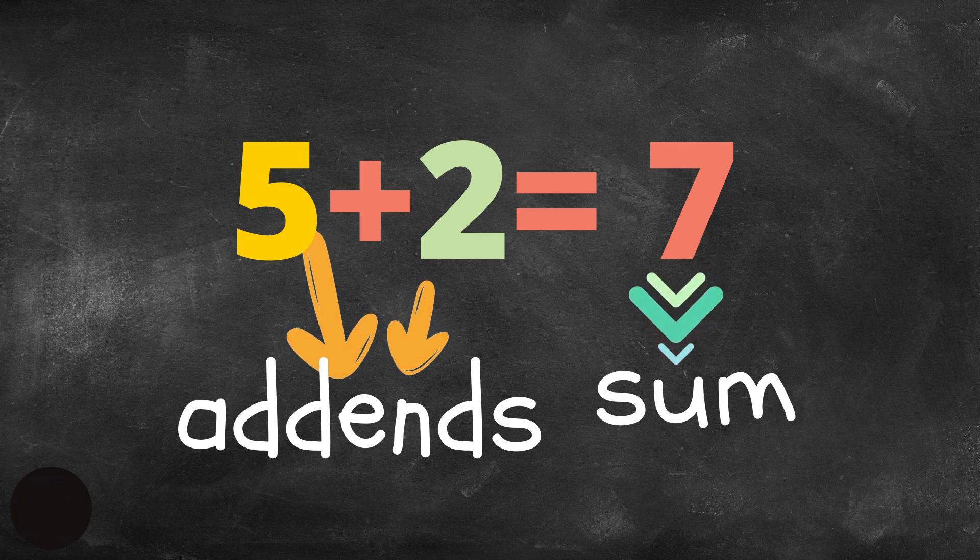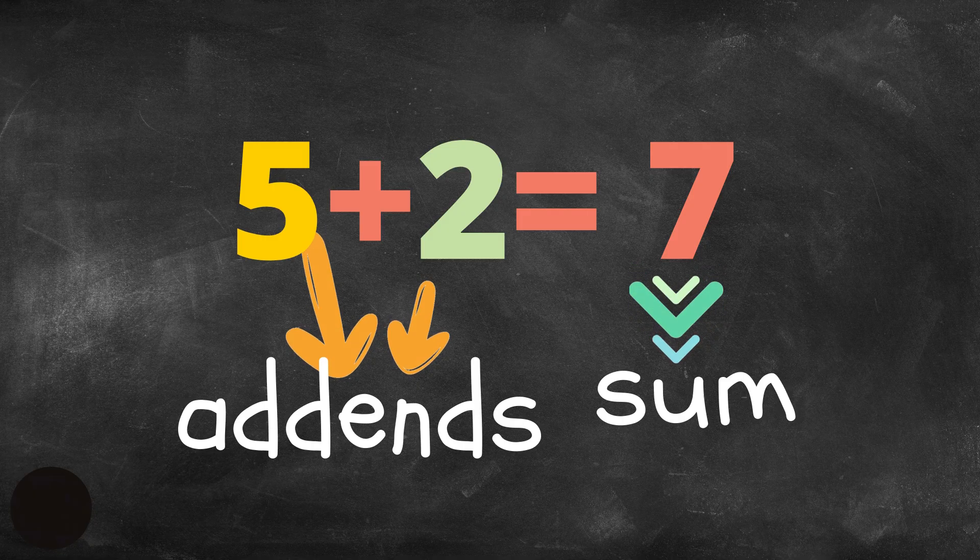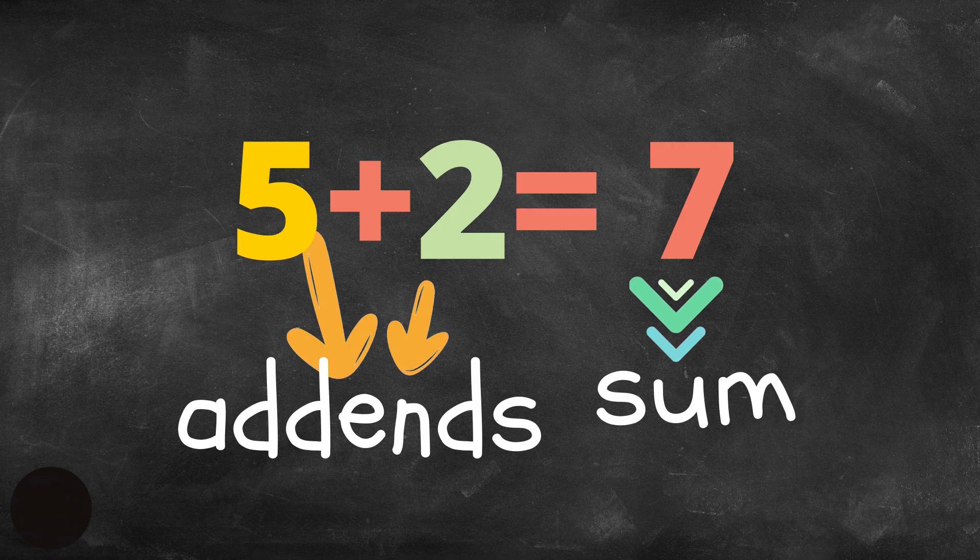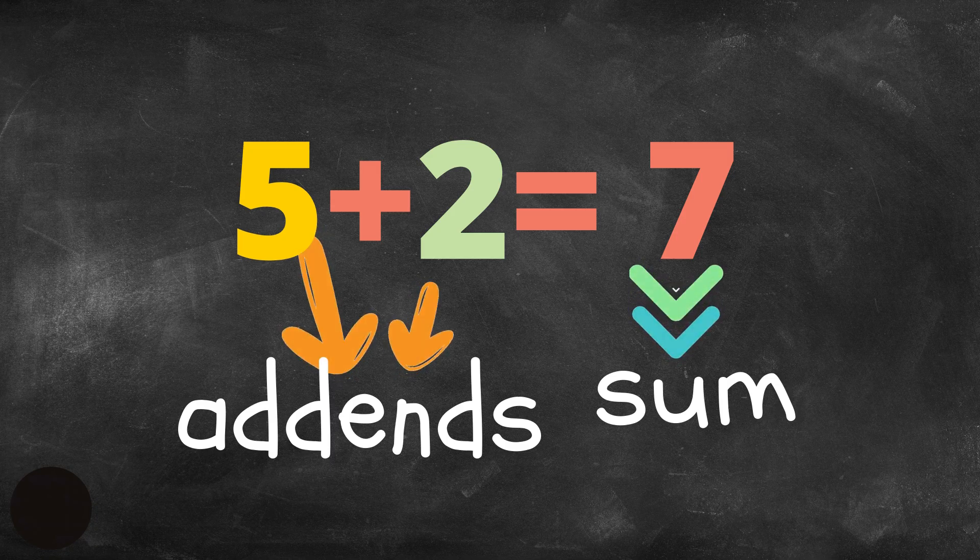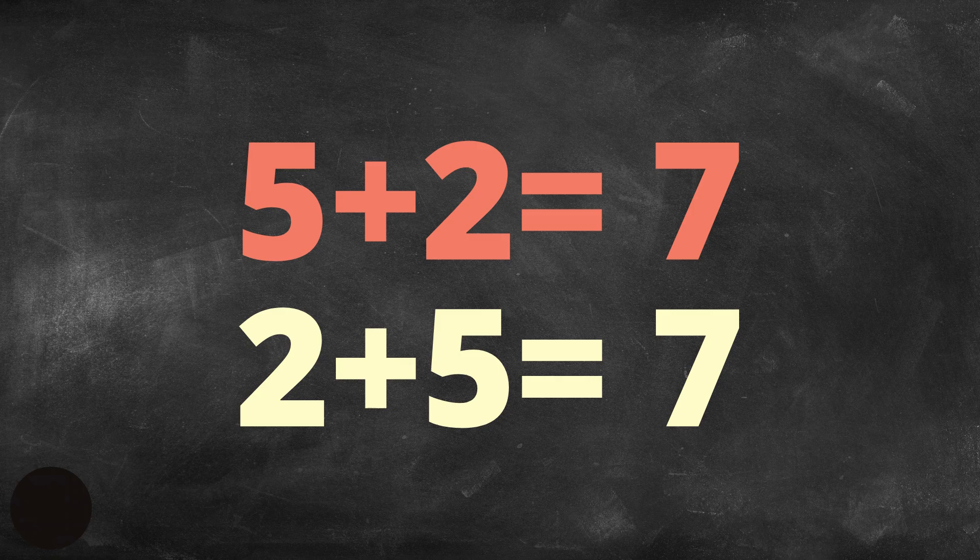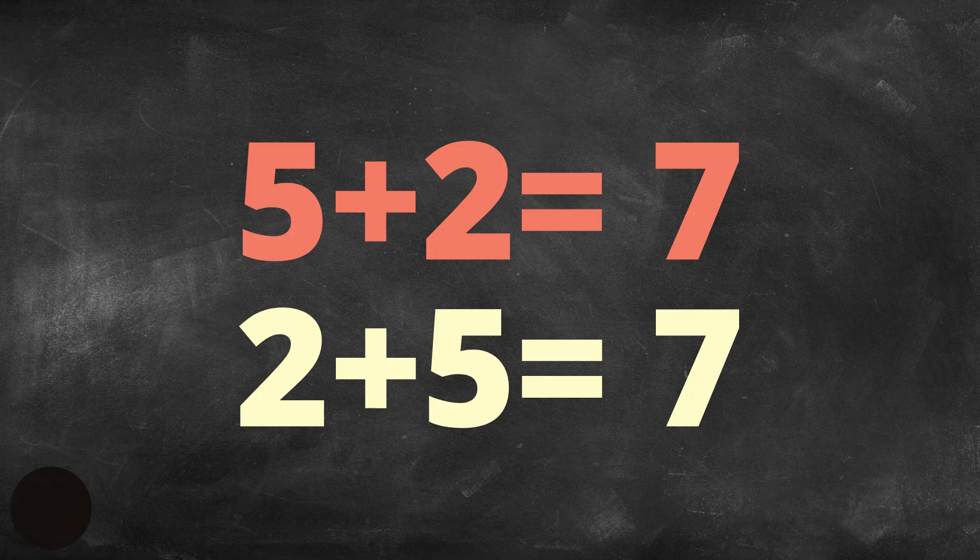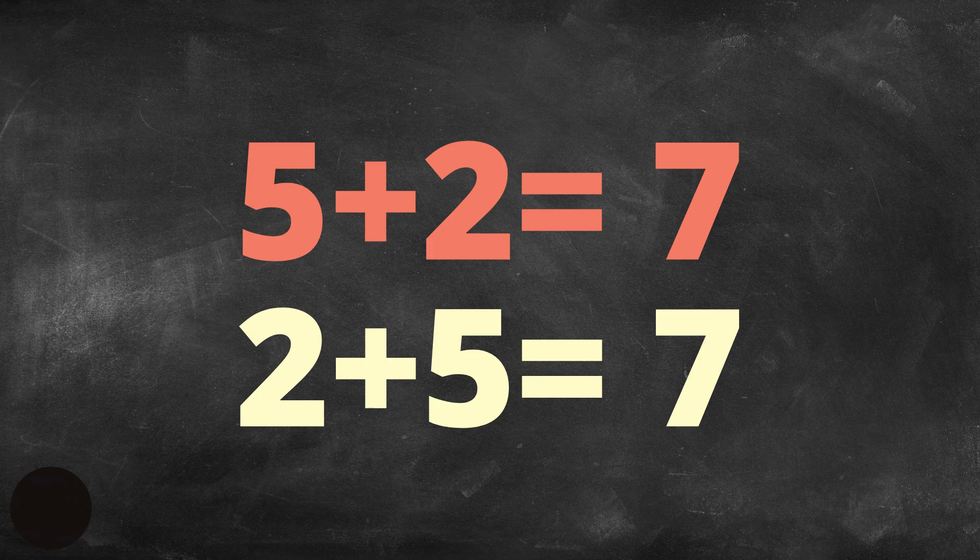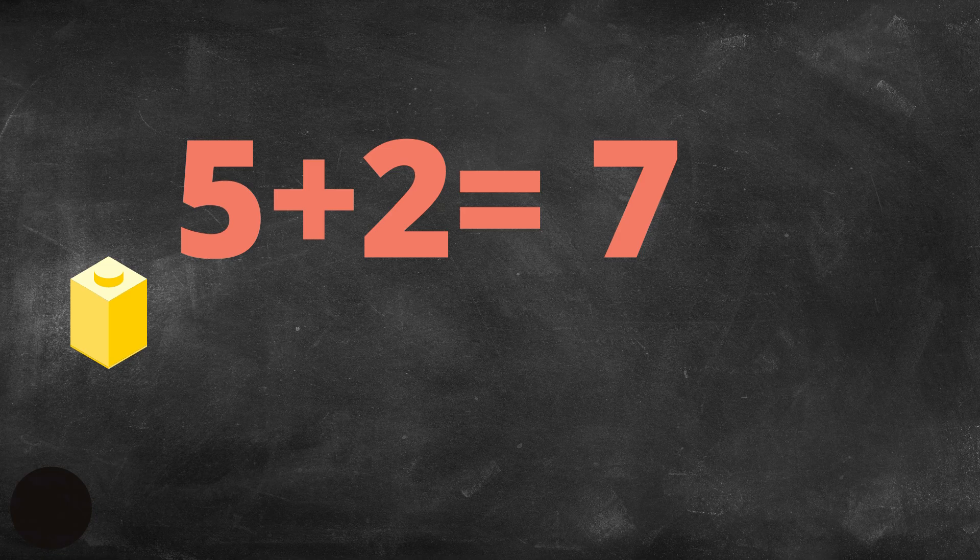So here, I put the 5 first, then the 2. Now it's 5 plus 2. And according to what we learned today, the sum is supposed to be the same. It's still supposed to be 7. So 5 plus 2 should equal 7. That means that 5 plus 2 or 2 plus 5, they should both equal 7. Let's check how this happens.